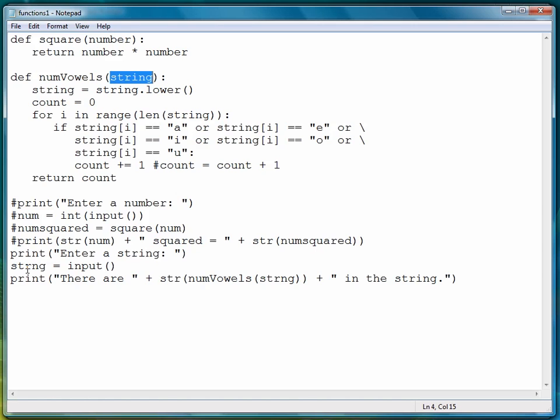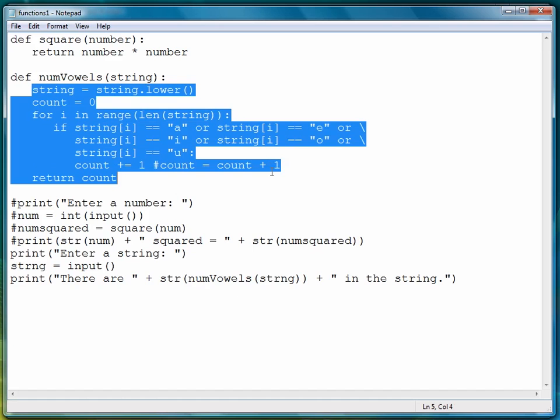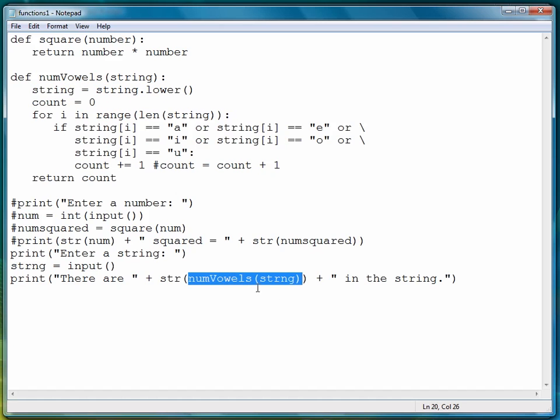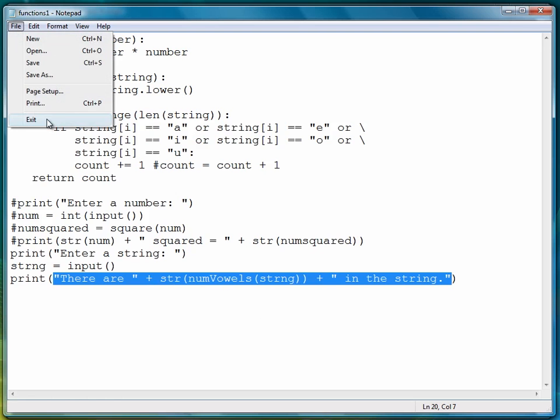So let's review what we've done here before we run the program. We prompt the user to enter a string. We get their input and store it in the variable strng. Then we call the function with the argument strng. It will execute its code, return a count. That return value will replace the function call. It will be converted to string so that it will match up with the rest of the string, and then we'll display the number of vowels. So let's exit and save.